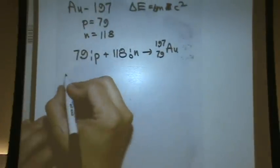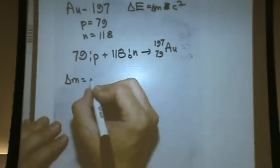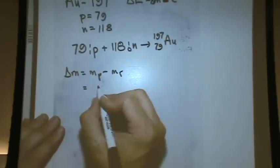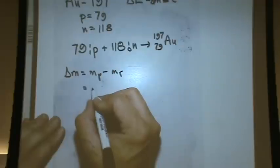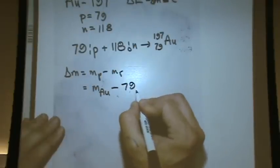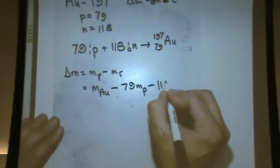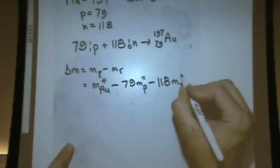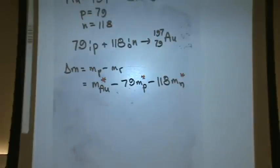Then you would calculate the change in mass as your next step. That's the mass of the products minus the mass of the reactants. The mass of the products is the mass of the reactants. Well, there's 79 mass of the proton minus 118 mass of the neutron. And so you'd calculate that change in mass.